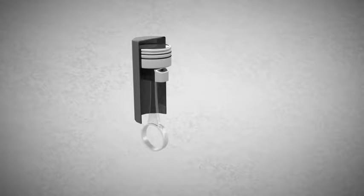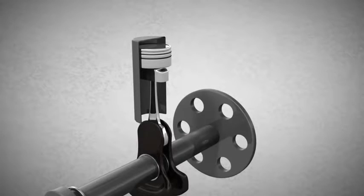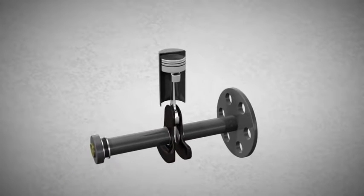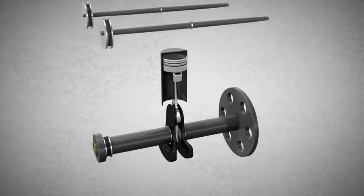The piston is connected to the crankshaft through the connecting rod. The crankshaft transmits the rotational movement to the gearbox and consequently drives the wheels of a car or motorcycle.